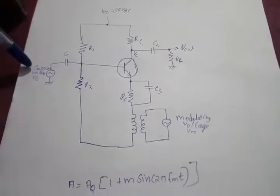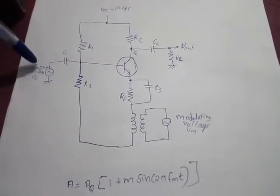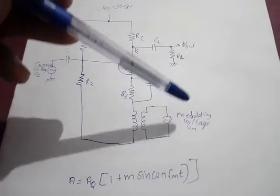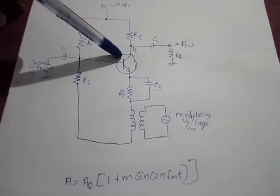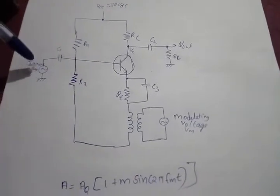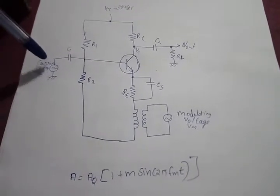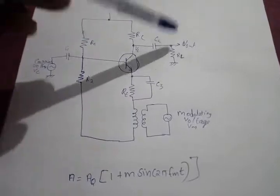Here there are two inputs. One is carrier signal and another is modulating signal. In the absence of modulating signal, the circuit acts as a class A amplifier. That is, the circuit amplifies the carrier signal in the output.